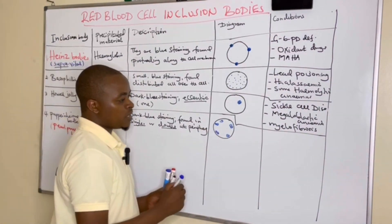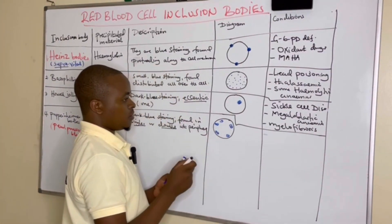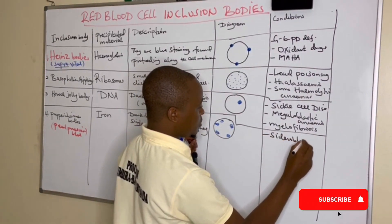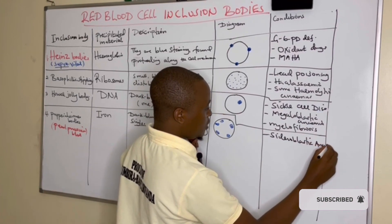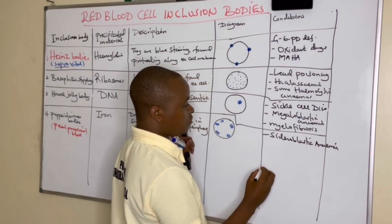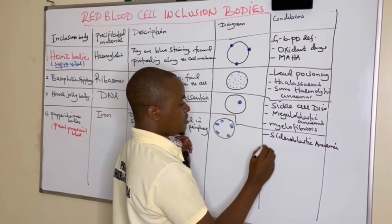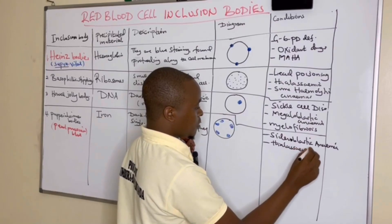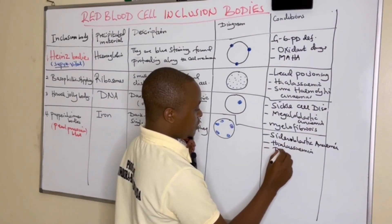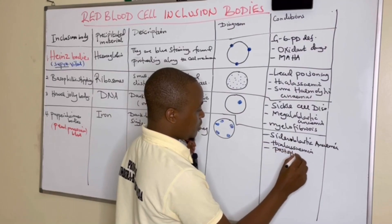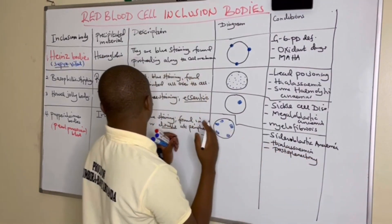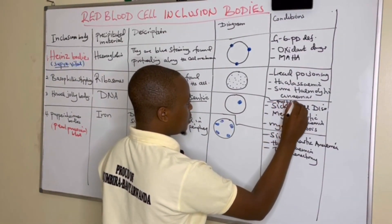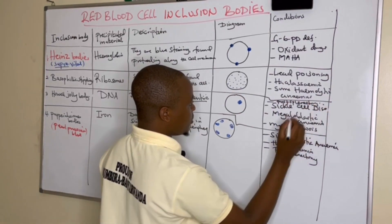Pappenheimer bodies are seen majorly in sideroblastic anemia — anemia due to accumulation of iron — and in thalassemias. Sometimes post-splenectomy you can find them there as well. The Howell-Jolly body can also be seen post-splenectomy.